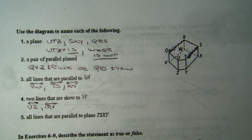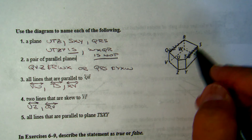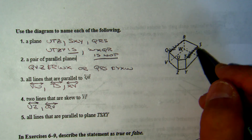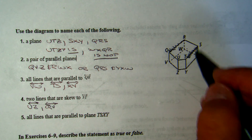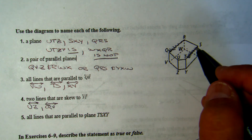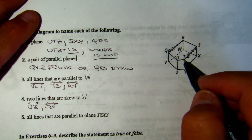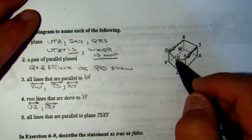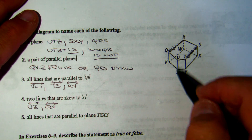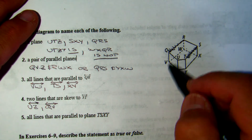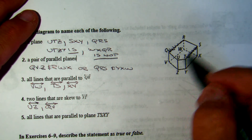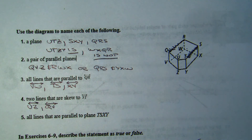Two lines that are skewed to ST: ST is going from front to back, so you don't want front-to-back, but you also don't want to intersect. SX isn't valid because it's in the same plane; TY isn't because it's in the same plane. But UZ is going in a different direction and is not in the same plane, so UZ is skewed. QV is parallel to UZ and also skewed because it's in a different plane.